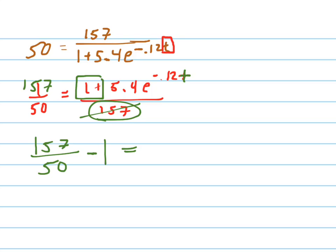Equals. Now I get rid of the what? 5.4. How do I get rid of the 5.4? Divide that entire side by 5.4. Now I get rid of the... So let me do this one more carefully. So there's my answer so far. Now that I have isolated the exponential, now that I've got that by itself, now I can take the natural log of both sides.